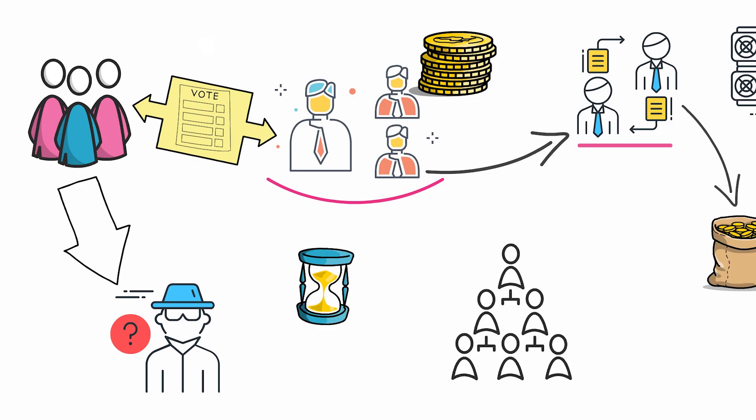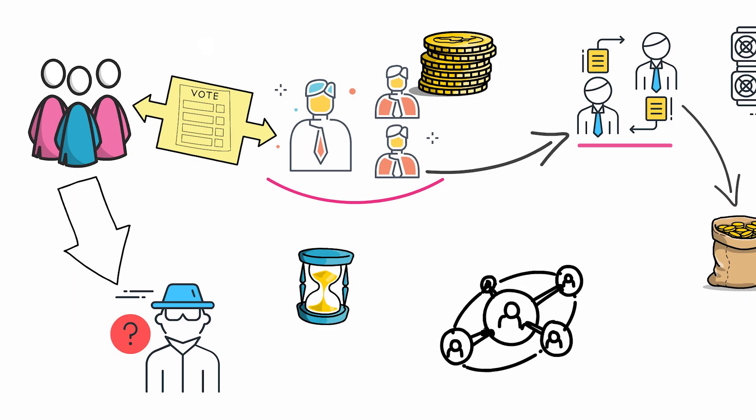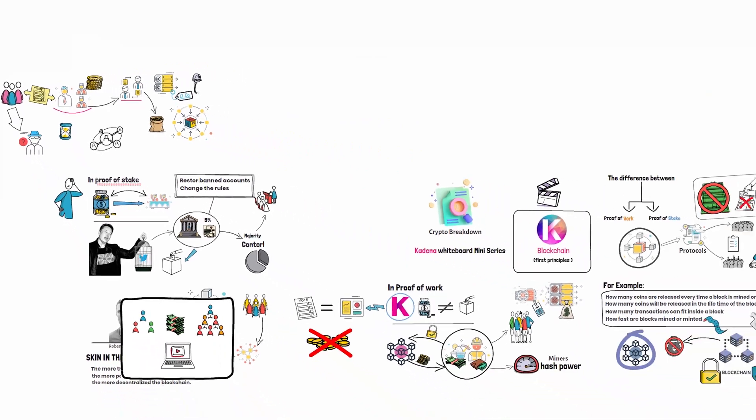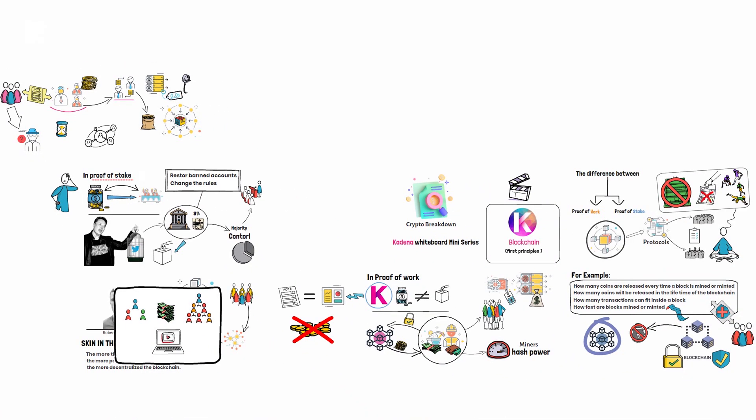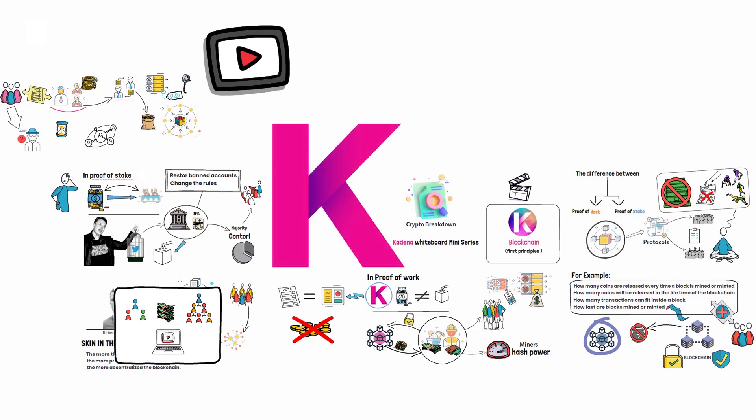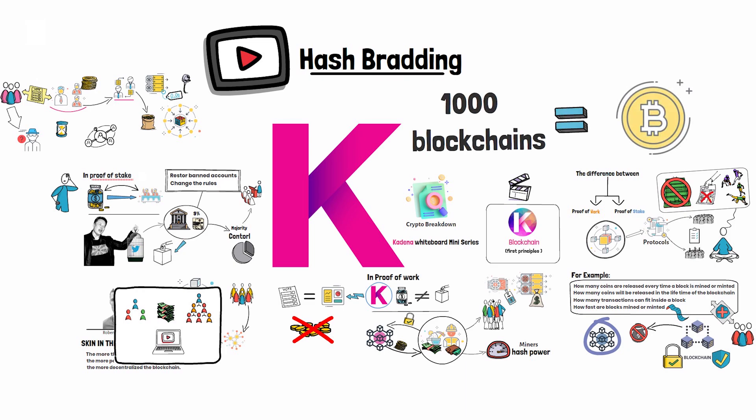Now this was just the tip of the iceberg in understanding what makes Kadena's blockchain so unique. In the next video we're going to dive into Kadena's genius approach to scaling called hash braiding. Hash braiding allows Kadena to secure a thousand blockchains the same size as Bitcoin and use less electricity than it takes to secure one Bitcoin blockchain.